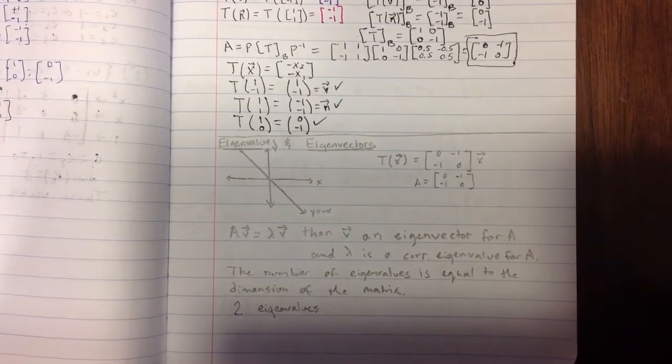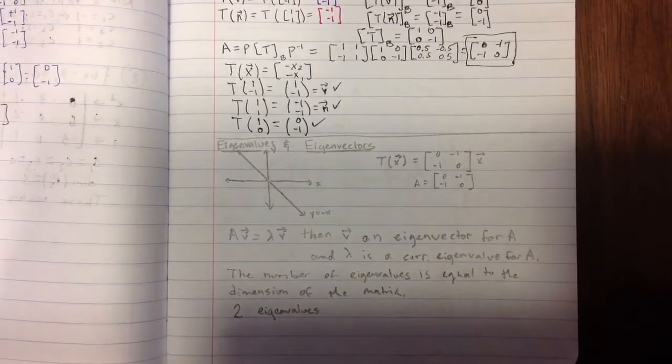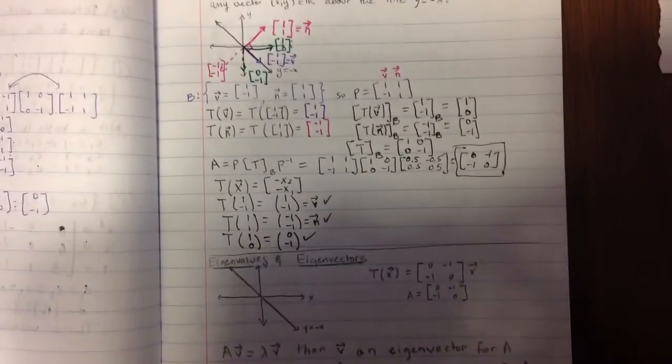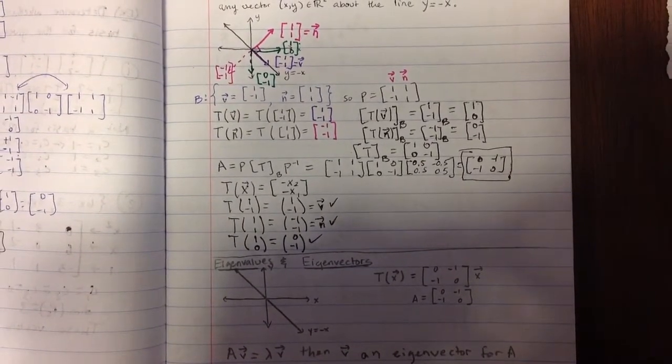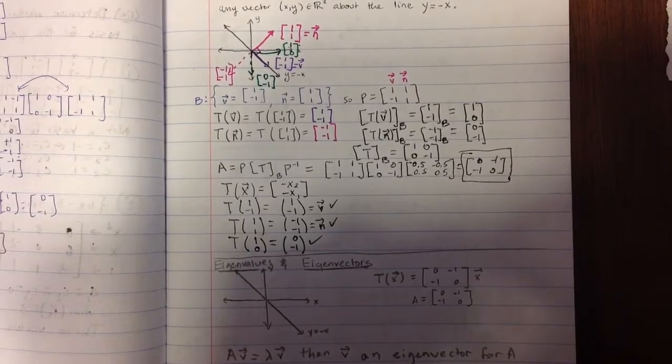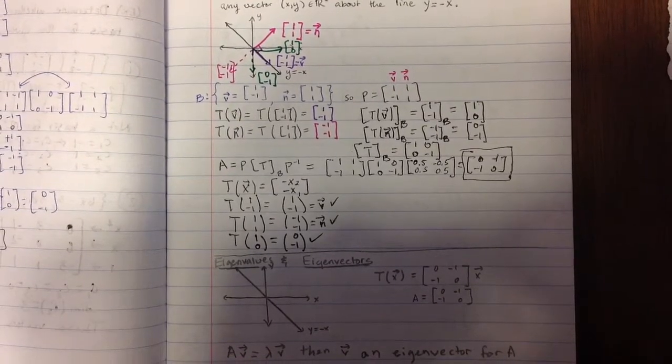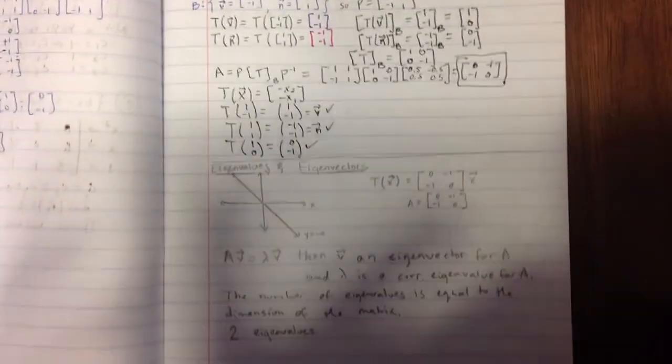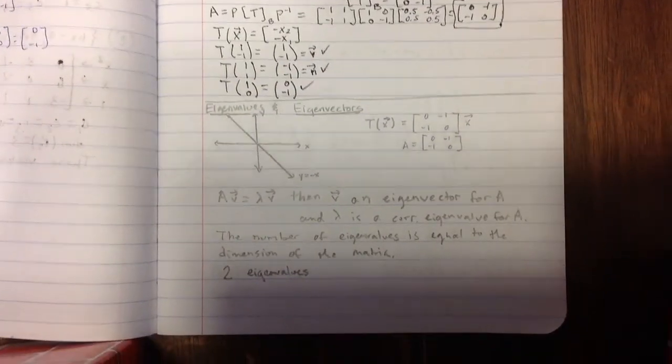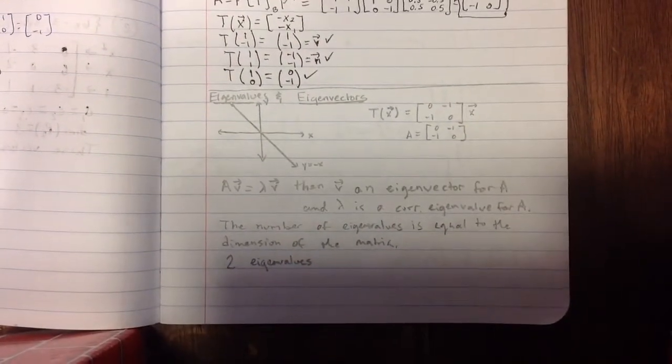So I claim that if we sort of look up top here, that those eigenvalues should be exactly corresponding to those eigenvectors that we're using up here, the one in purple and the one in red. So let's take a look at that and why that might be the case.